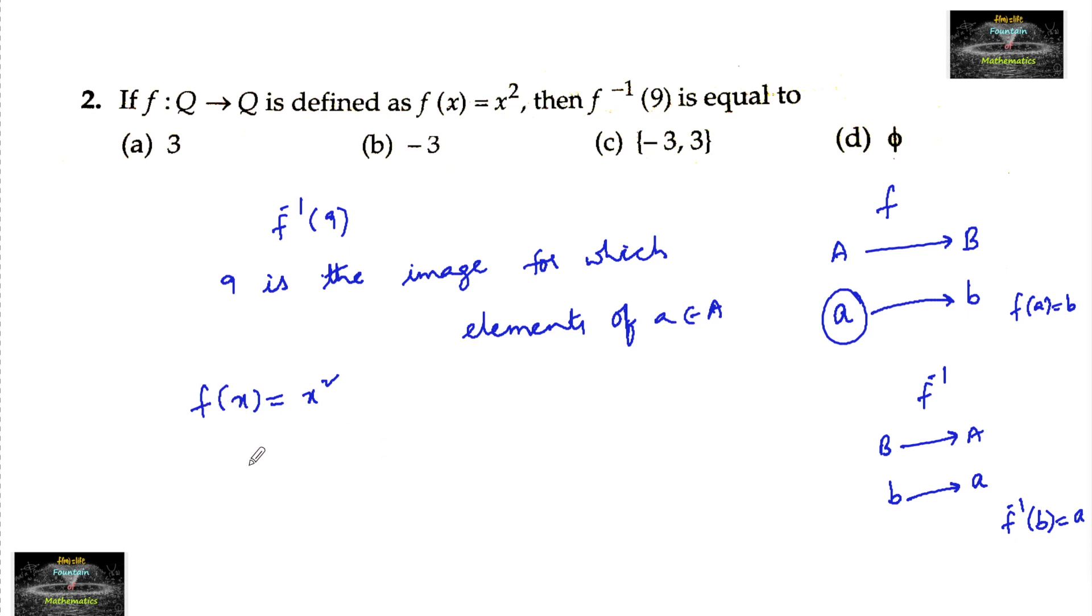For +3 and -3, the square is 9. That is, f(3) = 3² = 9.